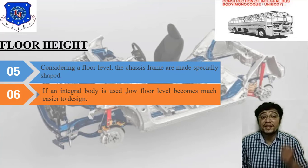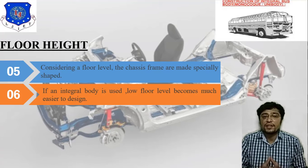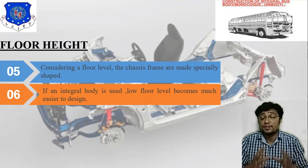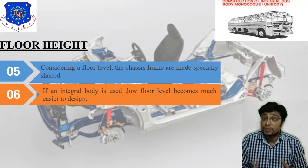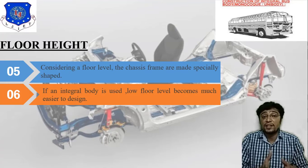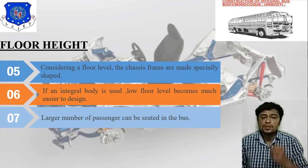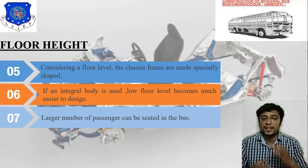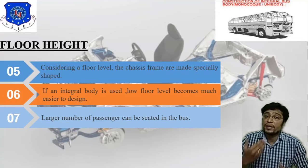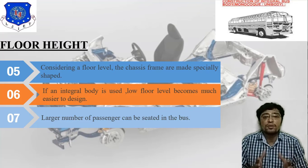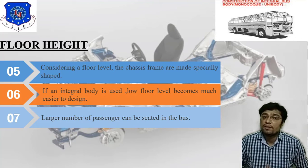Sixth point: if an integral body is used, low floor level becomes much easier to design. As per ergonomics concerns, we can construct the monocoque chassis covering the passenger area, driving area, and luggage area — this is what the integral body refers to. Seventh point: a larger number of passengers can be seated in the bus. By constructing a design that increases passenger capacity, according to application we can construct the seating area for passengers.